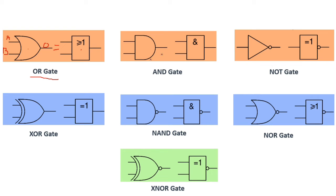Here we have the AND gate, and also we see the NOR gate. The NOR gate always has this small circle — so the equivalent symbol also has this circle. This symbol and this symbol are the same. For the NOR gate, we add this small circle.